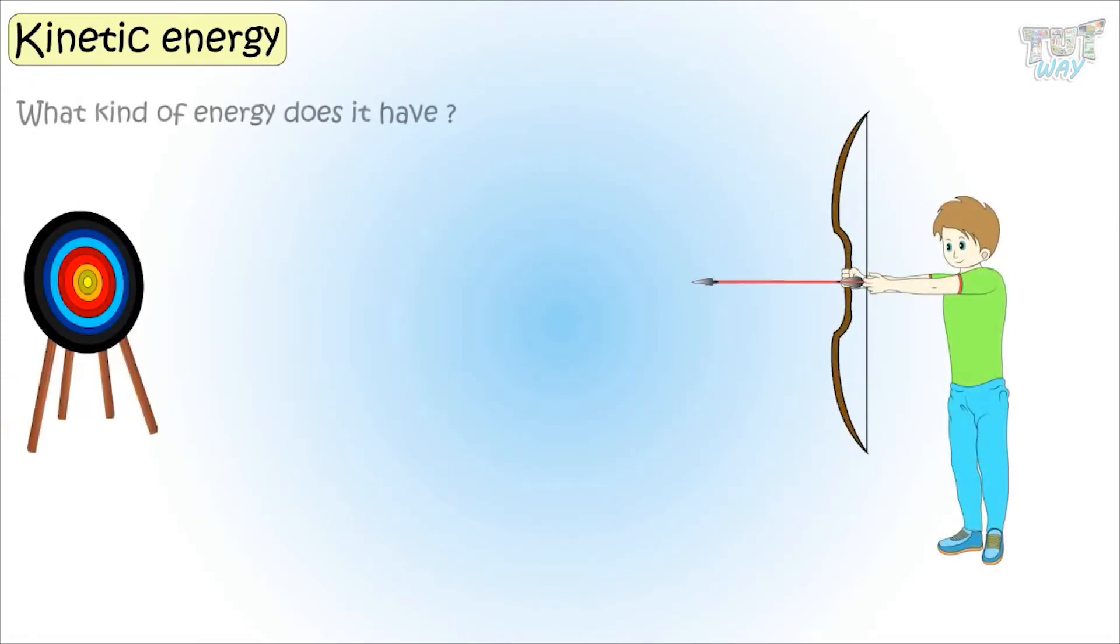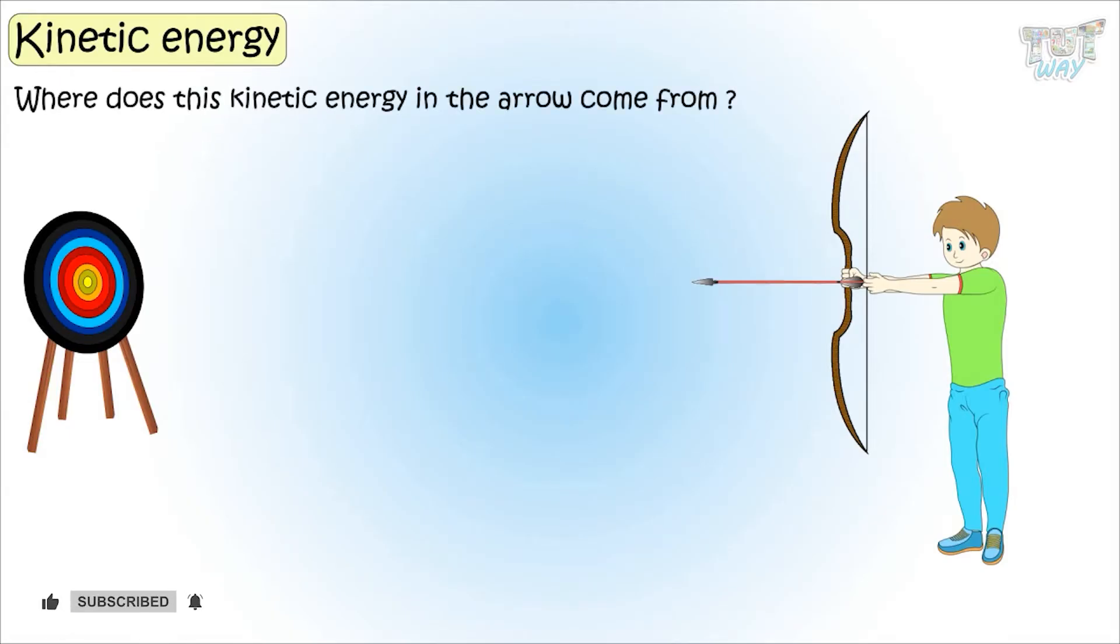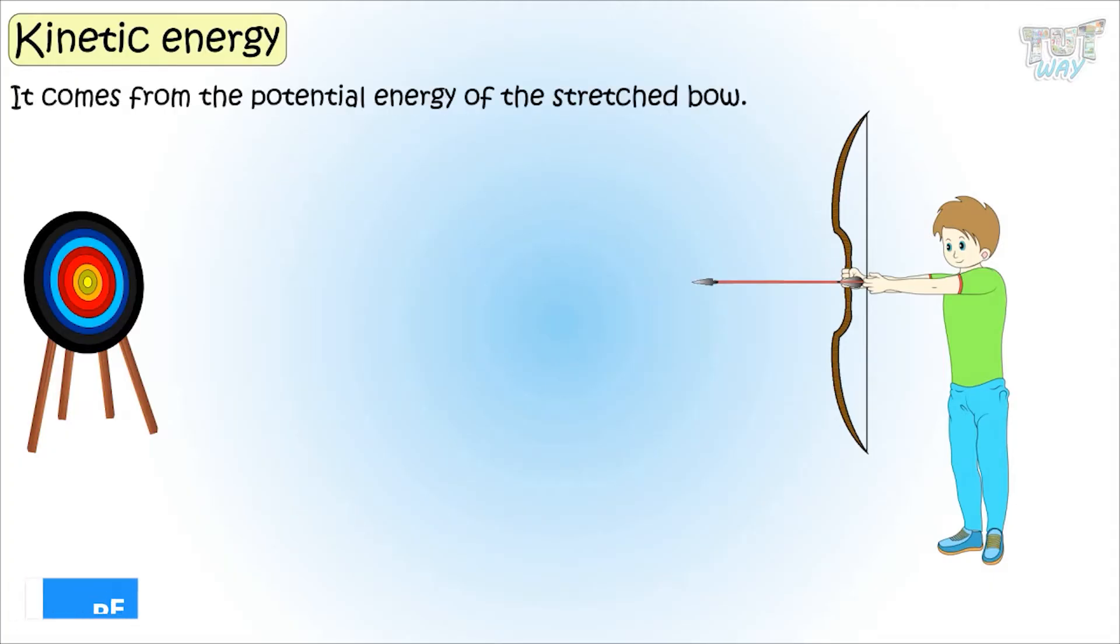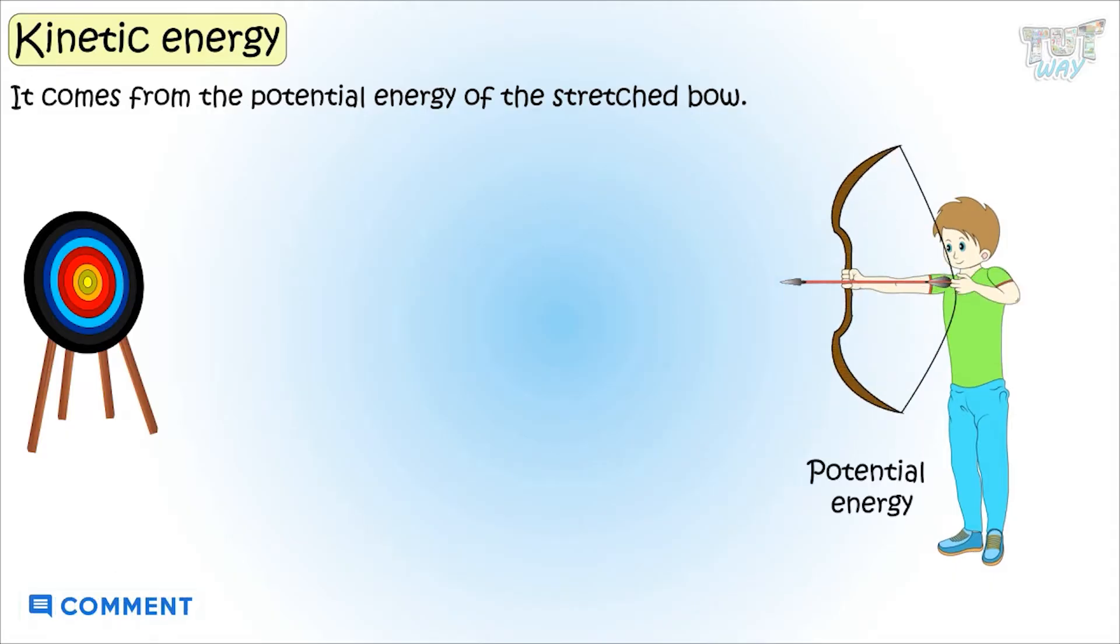Shooting arrow. What kind of energy does it possess? It has kinetic energy. But where does this kinetic energy in the arrow come from? It comes from the potential energy of the stretched bow. The bow possesses potential energy due to its position, which is a stretched position.